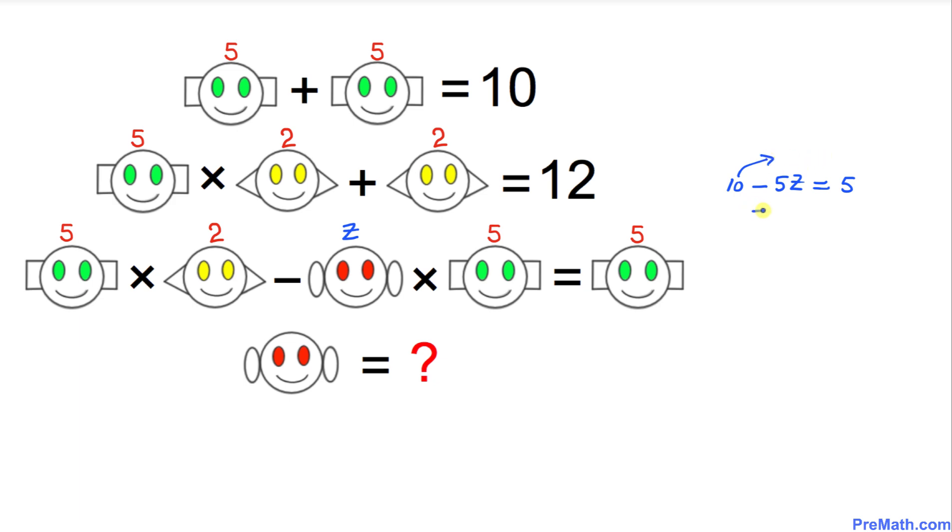So -5z = 5, and whenever we move this positive 10, when we move it on the other side it becomes -10. So we got -5z = -5. Let's divide both sides by -5 because we want to isolate z. So these -5 and -5 cancel out, and z turns out to be positive 1.